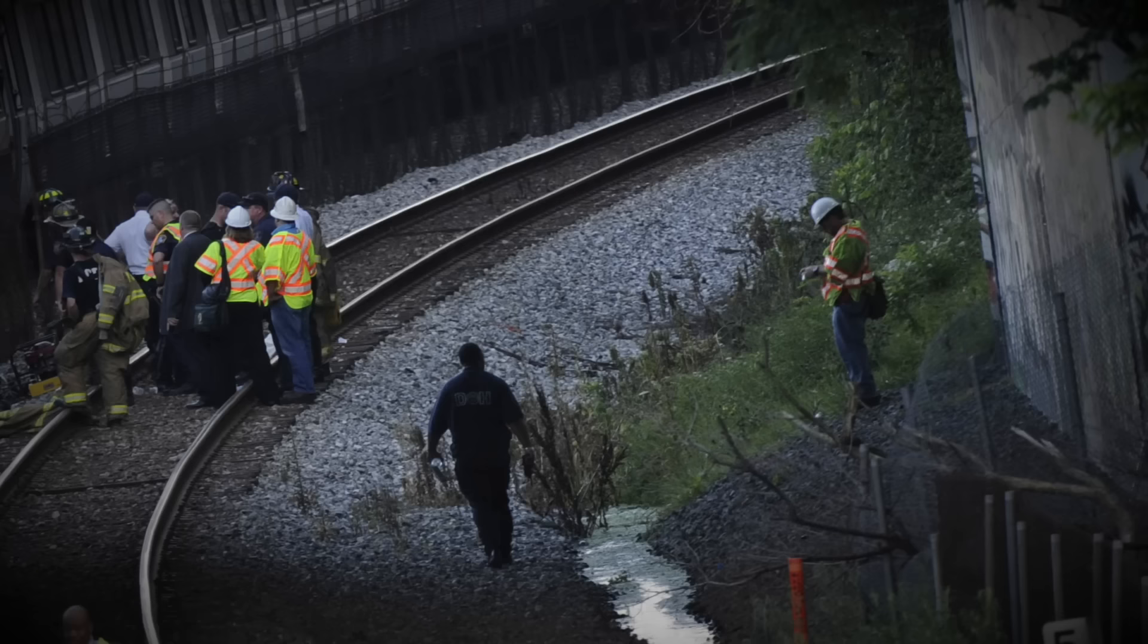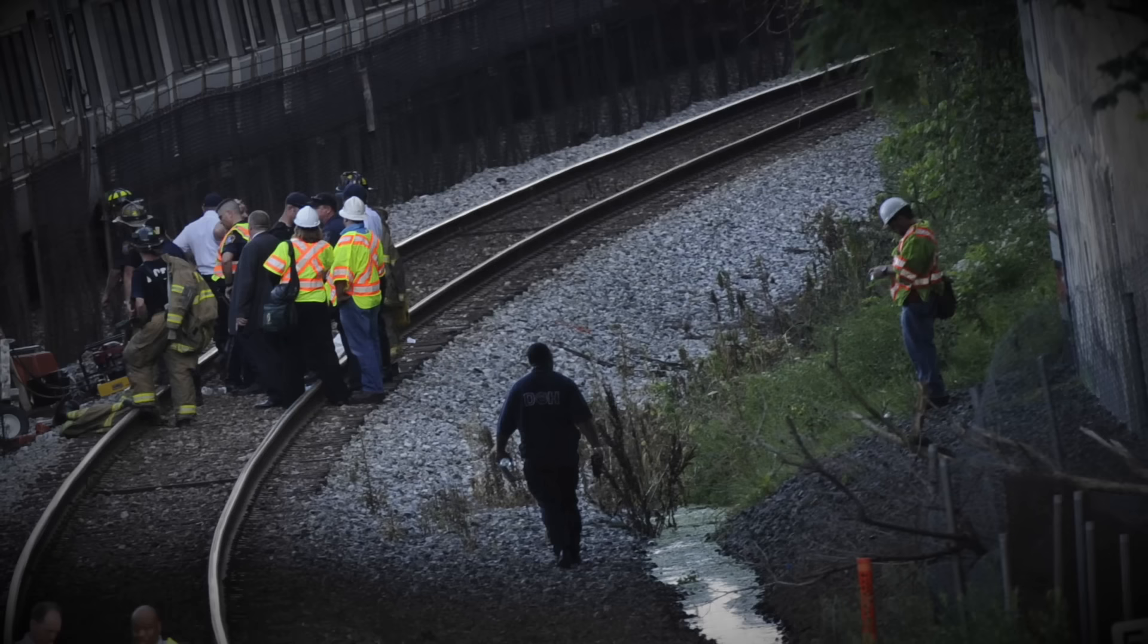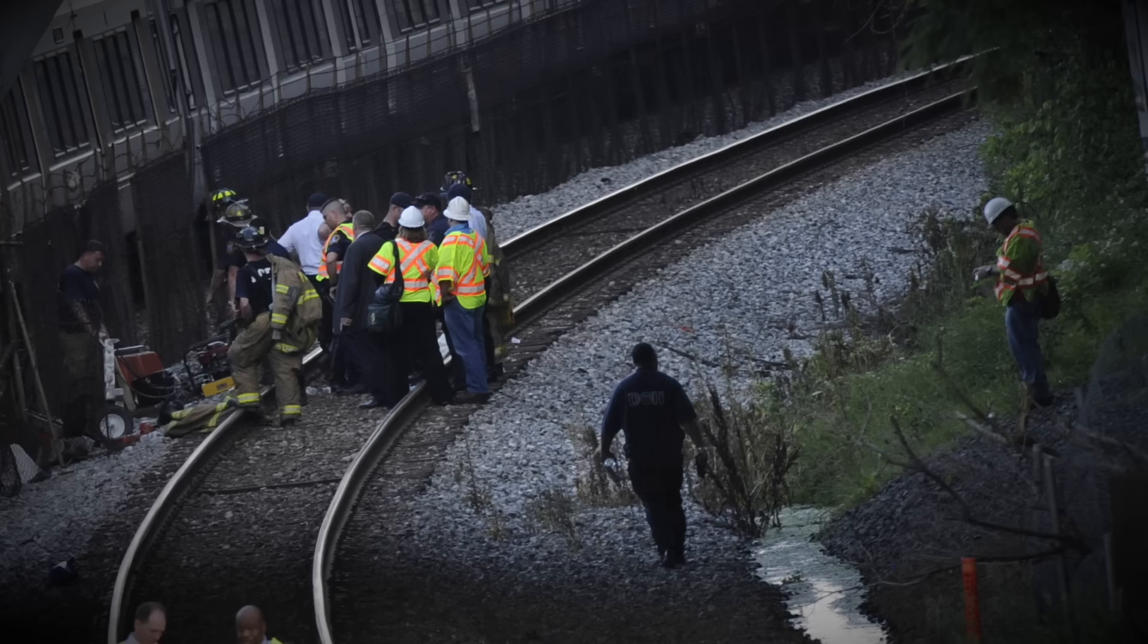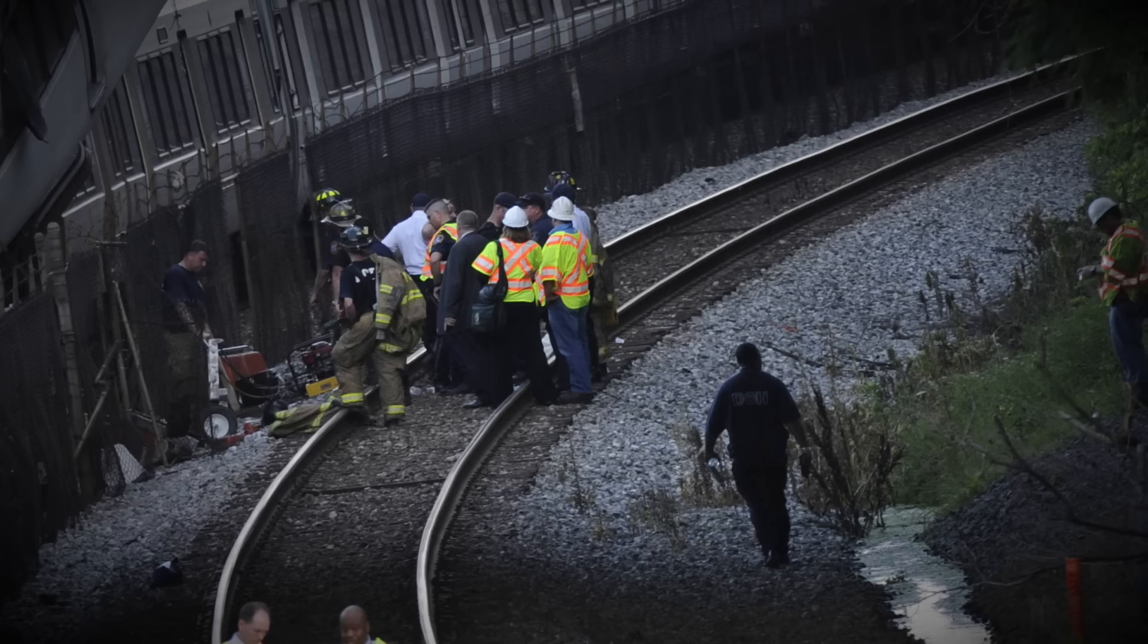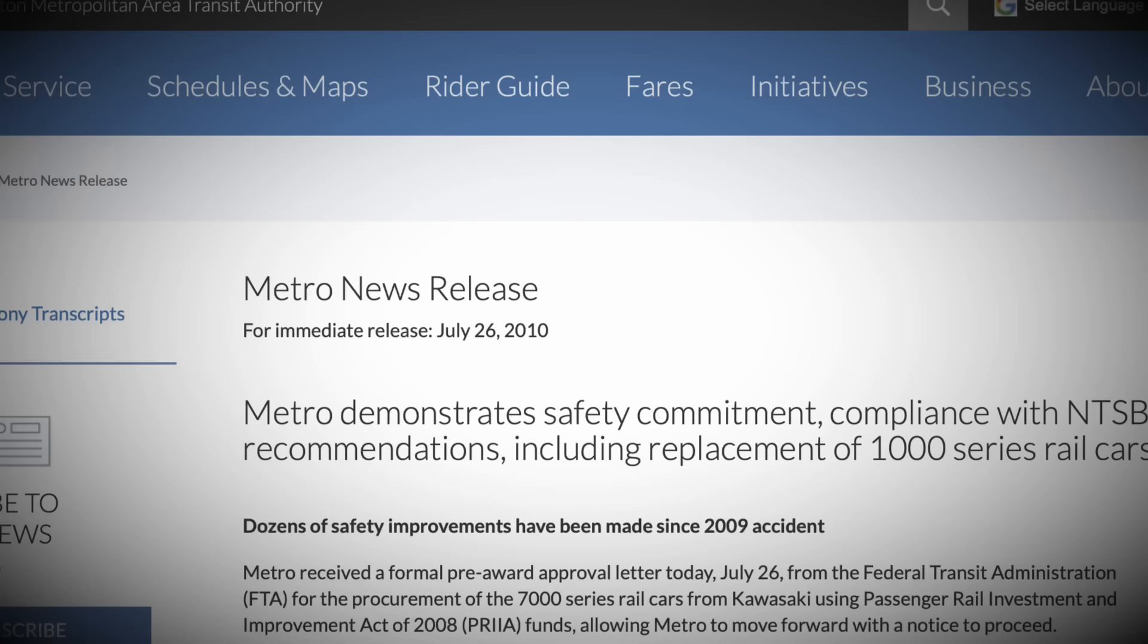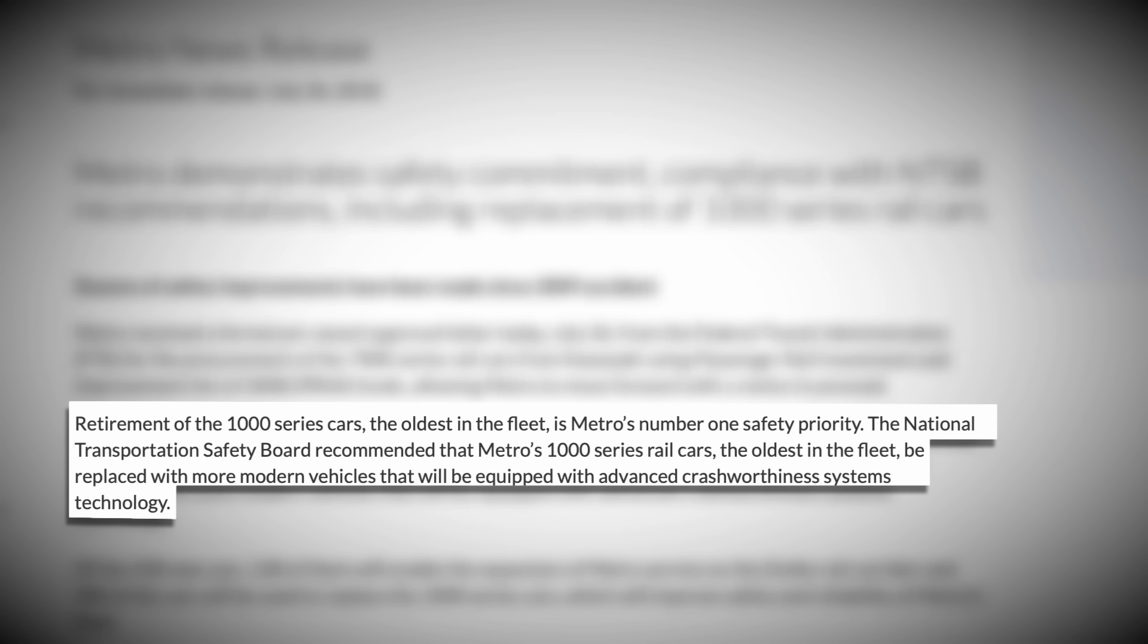The NTSB set out several recommendations, such as regular inspection of track circuits and the replacement of all 1,000 series Metro cars. This was because of the telescoping issue the units experienced in the crash and the very unsatisfactory crash worthiness that had been seen. The Washington Metro noted that retirement of the 1,000 series cars, the oldest in the fleet, is Metro's number one safety priority. The NTSB recommended these be replaced with more modern vehicles equipped with advanced crash worthiness systems technology.